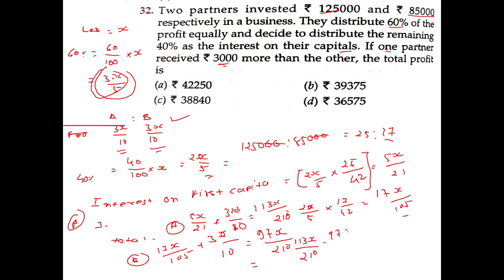The difference is: 113x divided by 210 minus 97x divided by 210 equals 3,000. Simplifying this equation, x is equal to 39,375.